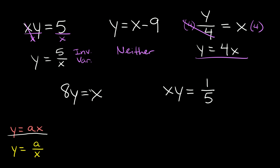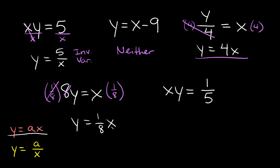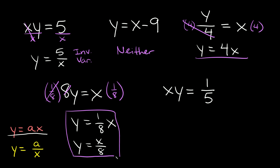Here we have 8y is equal to x. We can get rid of this 8 by multiplying both sides by 1/8. The 1/8 and 8 cancel out, so we're left with y is equal to 1/8 times x — some number times x — so that shows direct variation. Another way to rewrite this is y equals x over 8. Don't confuse this with inverse variation: here we have x over some number, whereas inverse variation is some number over x. These two are not the same thing.